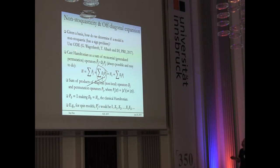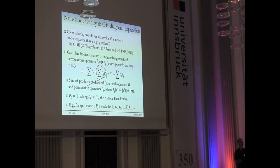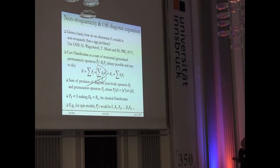In many cases we are interested in what happens when we are given a specific basis to work with and want to determine whether the model is non-stoquastic. Looking at off-diagonal elements and finding positive ones is not the right approach. I advocate using a recently developed method called off-diagonal expansion, which identifies a sign problem or true non-stoquasticity.